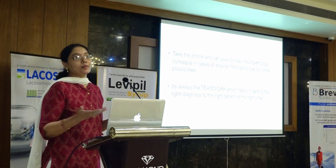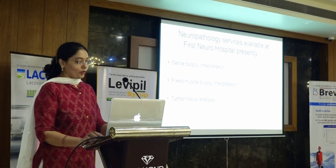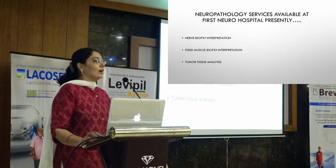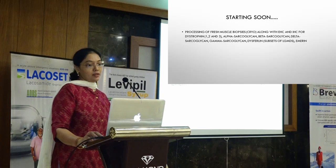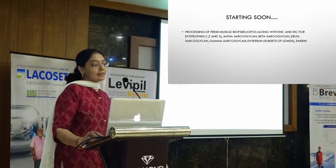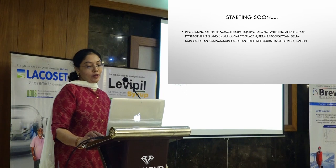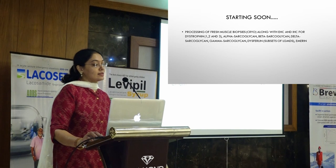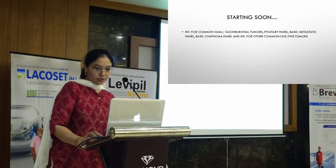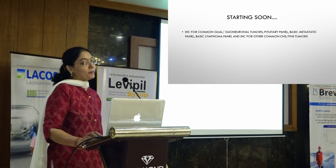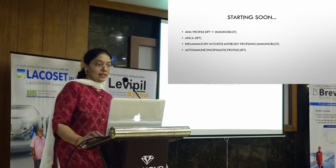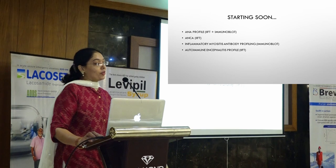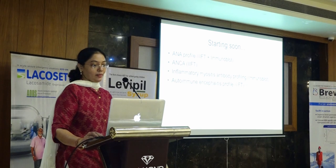Before I wind up, let me tell you what neuropathology services are available at FirstNeuro presently. We do nerve biopsy interpretation, fixed muscle biopsy interpretation, and tumor tissue analysis. But we will be starting soon the processing of fresh muscle biopsies along with enzyme histochemistry, and IHC for dystrophin 1, 2, 3 — corresponding to the rod domain, amino acid domain, and central domain — alpha, beta, delta, and gamma sarcoglycans as part of LGMDs, as well as dysferlin and emerin. Also IHC for common glial and glioneuronal tumors, pituitary panel, basic metastatic panel, basic lymphoma panel, and other IHCs for common tumors. Also starting ANA profile via immunofluorescence and immunoblot, ANCA via immunofluorescence, inflammatory myositis antibody profiling via immunoblot, and autoimmune encephalitis panel via immunofluorescence. Thank you.